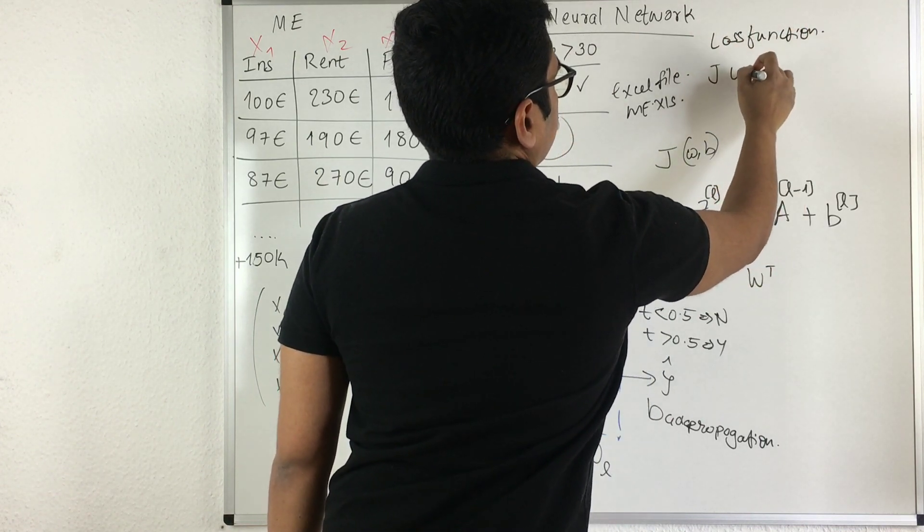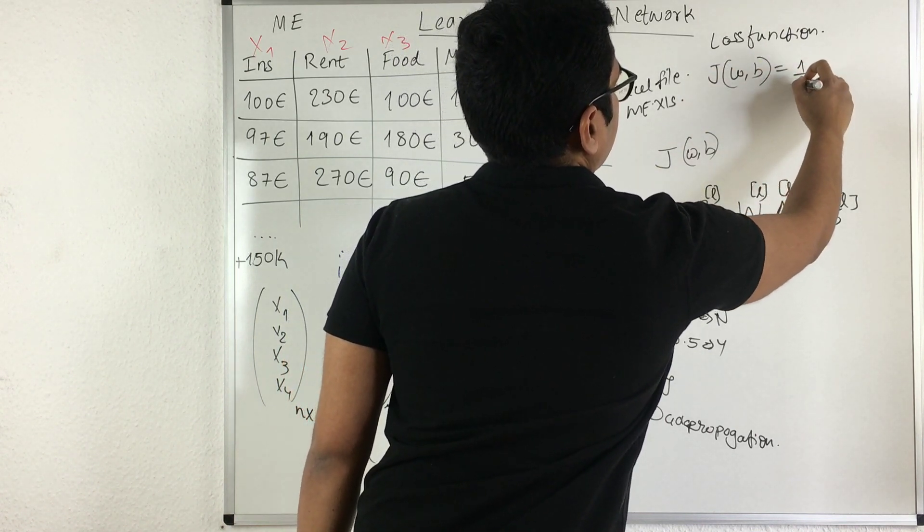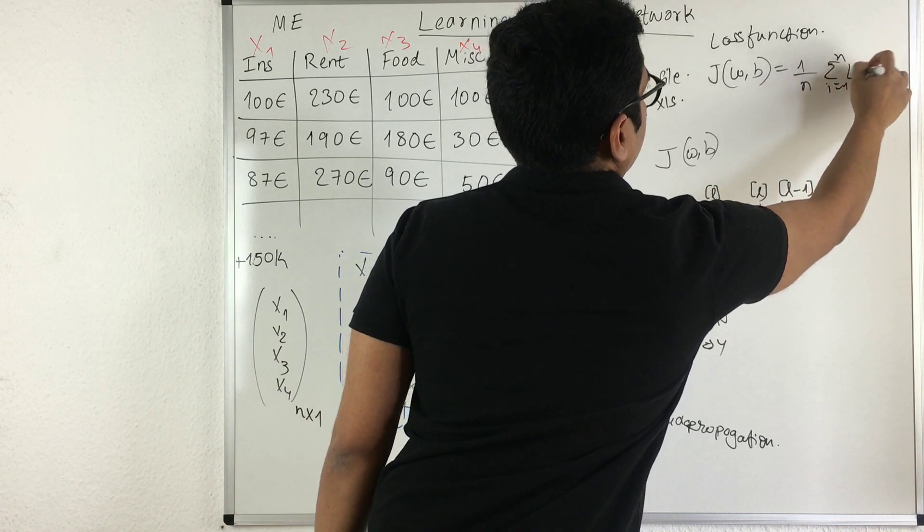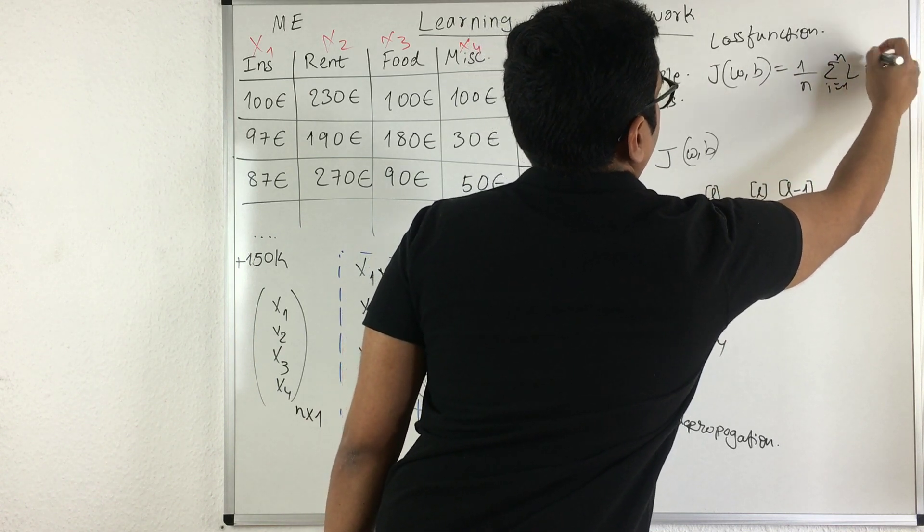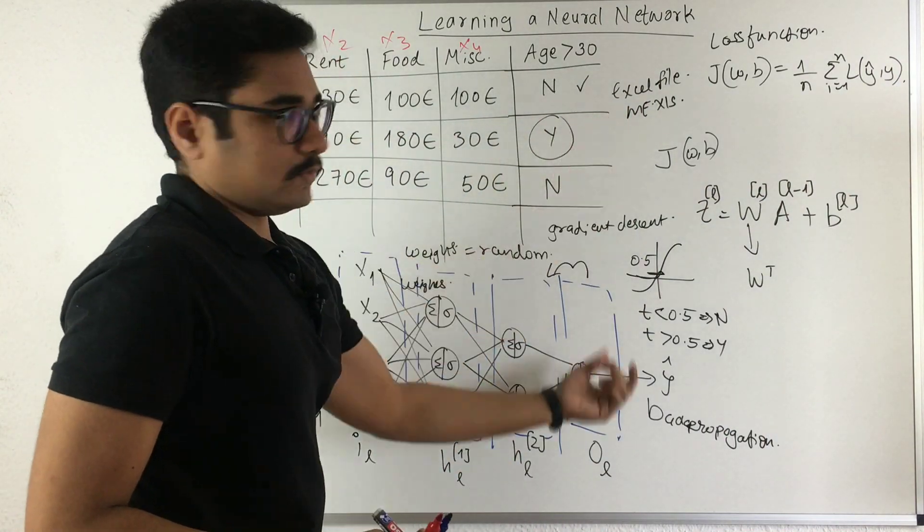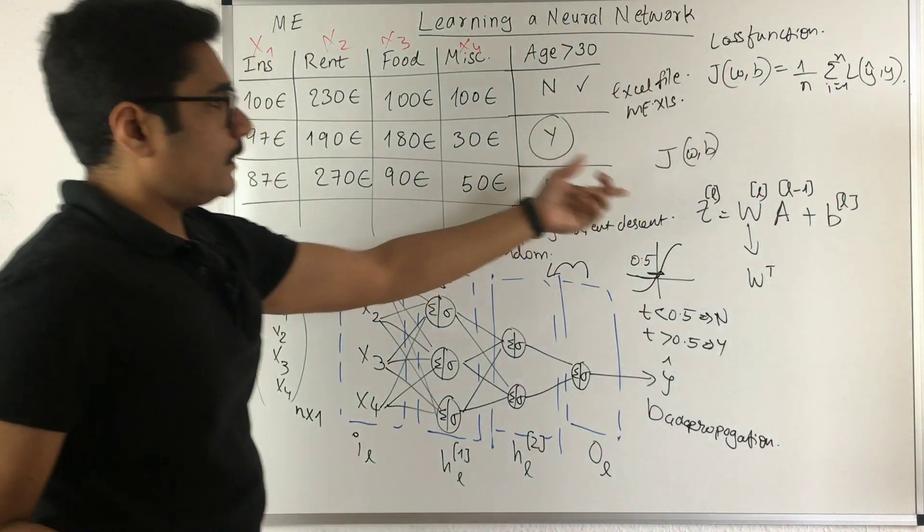Also, the loss function would be written as J with respect to w and b, given by 1 upon n, summation i runs from 1 to n, loss of y and y cap - that is what you got and what you want. If there is a change between those two, you will just update the weight accordingly.